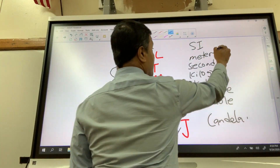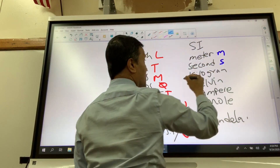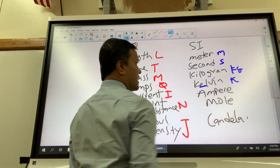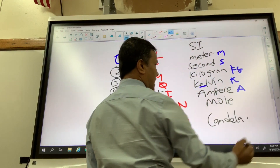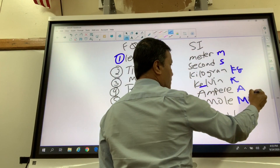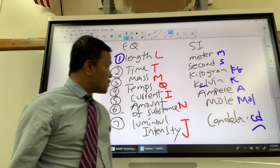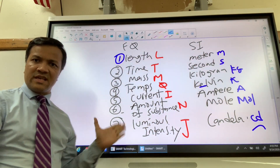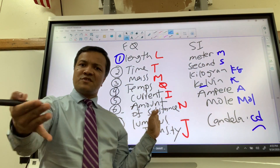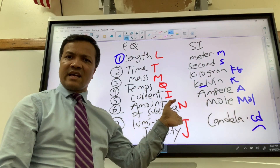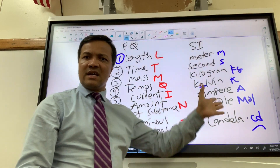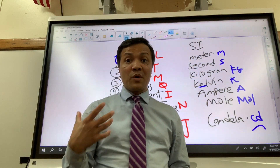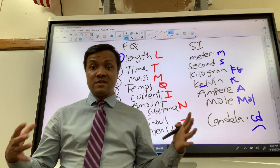Now I'll give you the unit symbols in blue. Meter is lowercase m, second is lowercase s, kilogram is kg, kelvin is lowercase k, ampere is capital A, mole, and candela. On the left side you see the fundamental quantity in dark, red represents the dimensional symbol, dark again represents the SI unit, and blue represents the unit symbol.